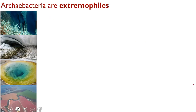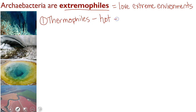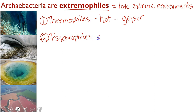Our archaebacteria are extremophiles, which just means that they love extreme environments. We're going to take a look at five different types of these extremophiles and where they might live. Our first type is our thermophiles, which as the name suggests, like heat or hot environments. An example of a hot environment where you might find them is a deep sea hydrothermal vent, a geyser, or a hot spring. In contrast, our psychrophiles like to live in places where it is cold, such as glaciers or the tundra.